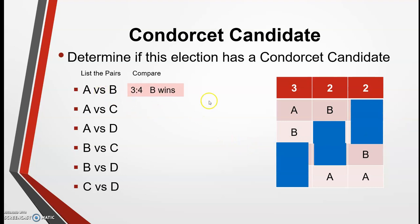For A versus B, remember we are only comparing A and B — we forget about C and D, and look just at A and B in each column. A wins the first column, so A gets three votes. B wins the second column and gets two votes, and B wins the third column and gets two votes. So A wins three, B wins four, and B wins the comparison.